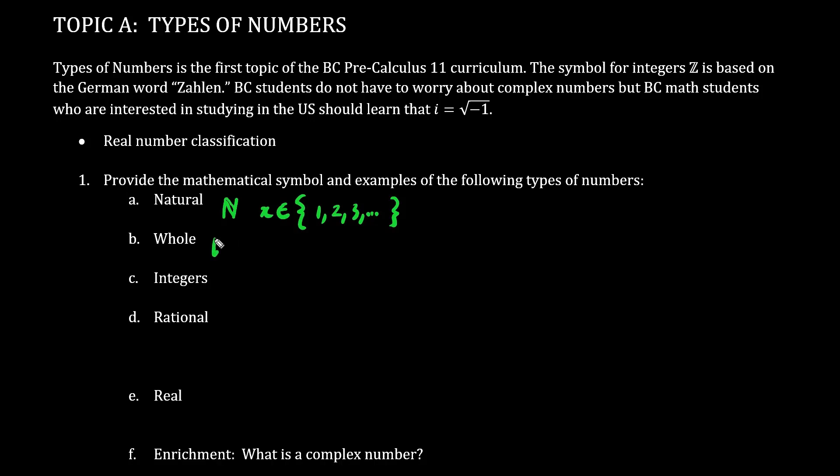Now whole numbers, W, include numbers such as 0, 1, 2, 3, dot dot dot.